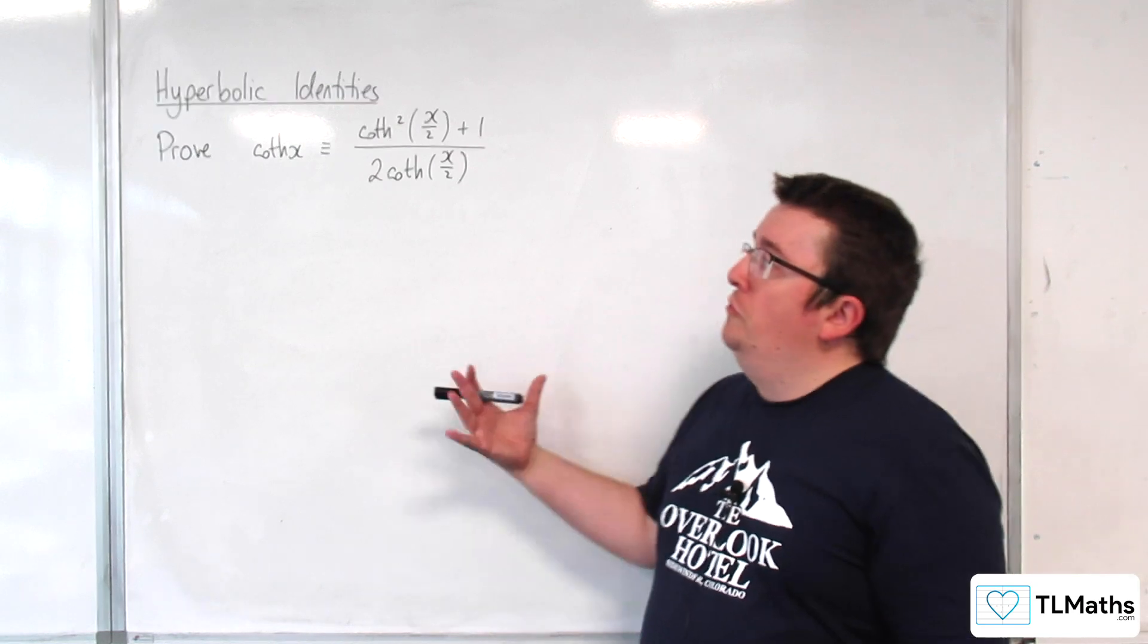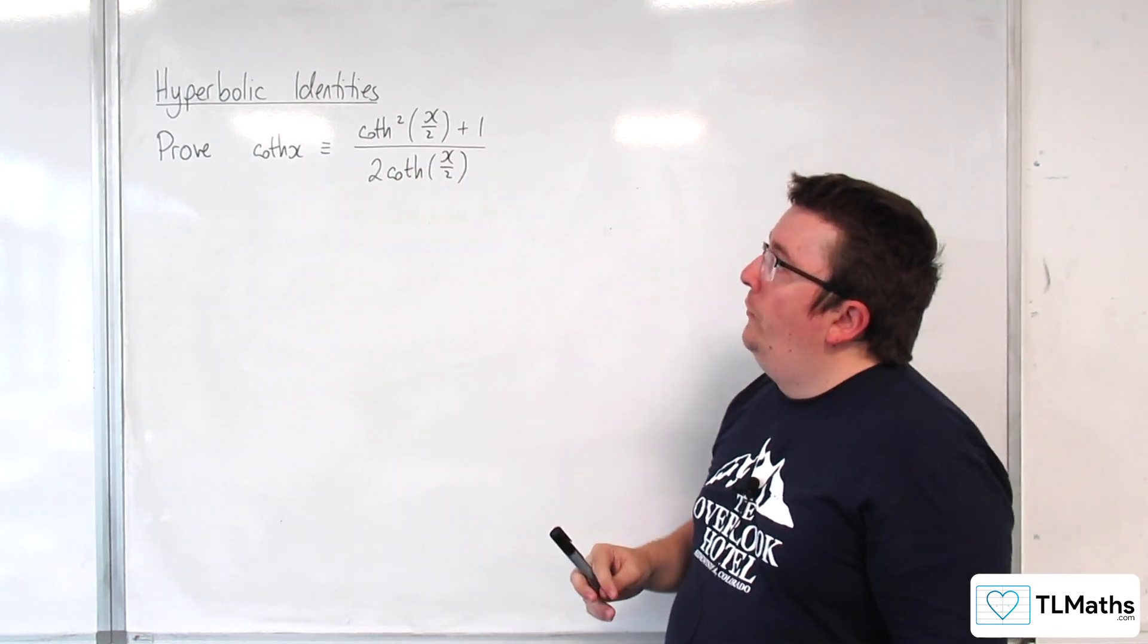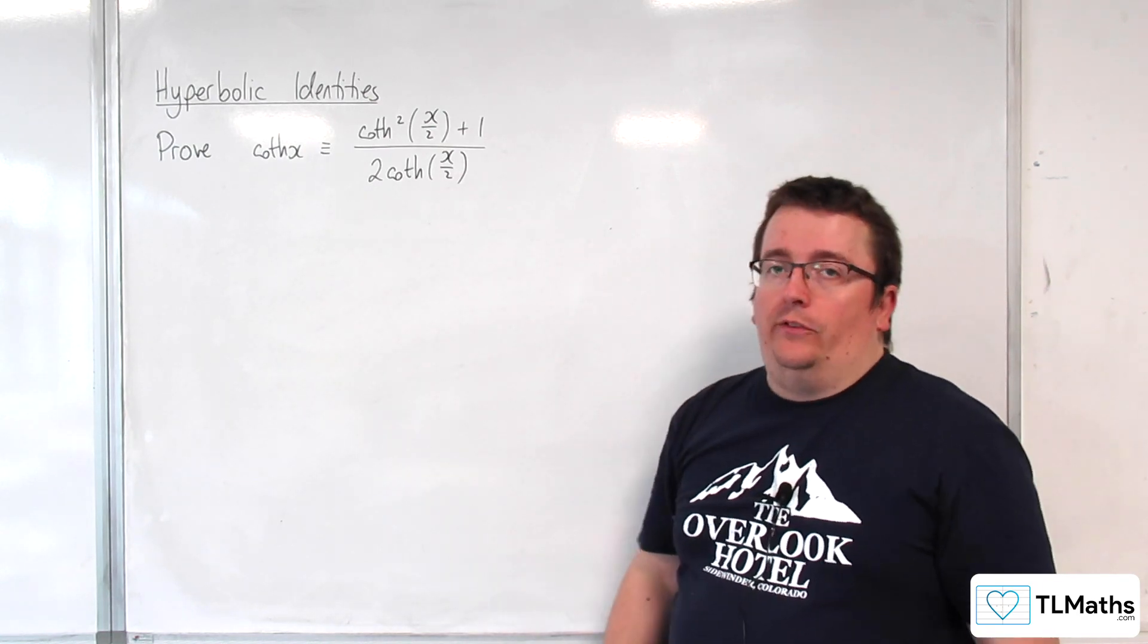In this video, we're going to prove the identity that coth of x is equivalent to coth squared of x over 2 plus 1 over 2 coth of x over 2.